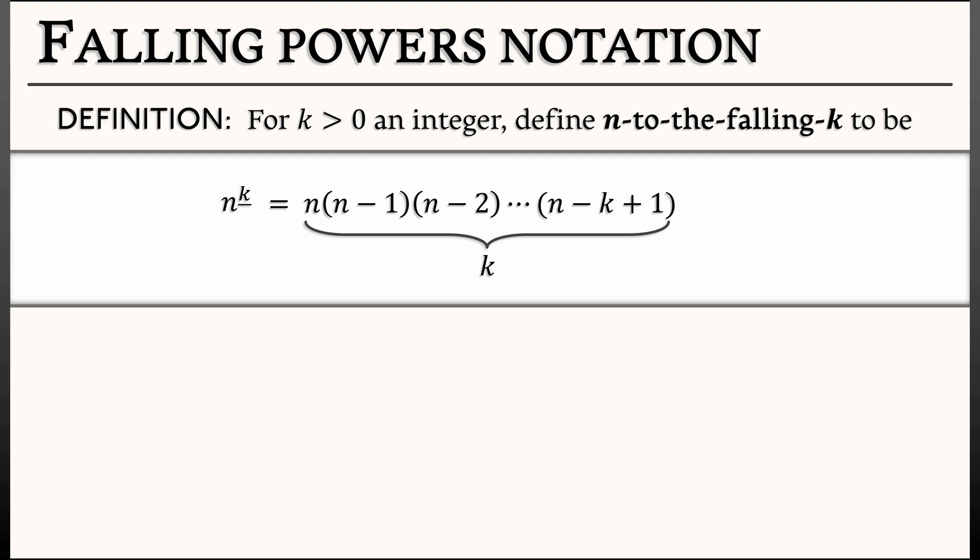That is, I have k of these terms. You could say that a little bit more compactly by saying that it's n factorial divided by n minus k factorial.